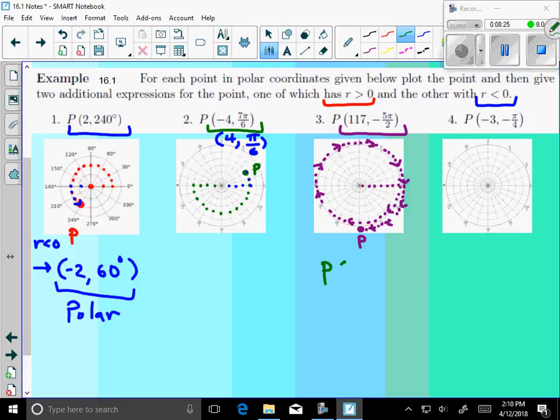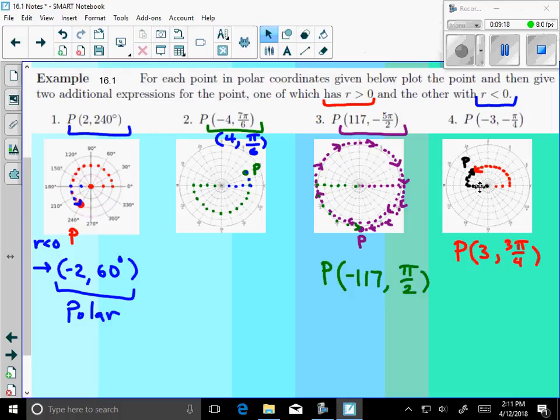While you're working, I'm going to work through a couple of these. If P is negative 4, 7 pi over 6, I go out 1, 2, 3, 4, and then I rotate 7 pi over 6 from that point, which is a little over pi. So there's the point. If I change this and turn it into a radius of 4, 1, 2, 3, 4, then I only have to rotate pi over 6. There are two representations where r is negative and r is positive.